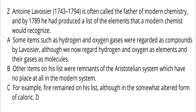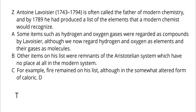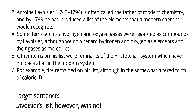Z: Antoine Lavoisier (1743–1794) is often called the father of modern chemistry, and by 1789 he had produced a list of the elements that a modern chemist would recognize. A: Some items, such as hydrogen and oxygen gases, were regarded as compounds by Lavoisier, although we now regard hydrogen and oxygen as elements and their gases as molecules. B: Other items on his list were remnants of the Aristotelian system which have no place at all in the modern system. C: For example, fire remained on his list, although in the somewhat altered form of caloric. D — Target sentence: 'Lavoisier's list, however, was not identical to our modern one.'